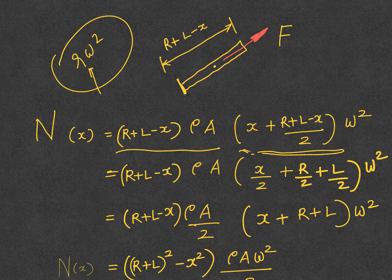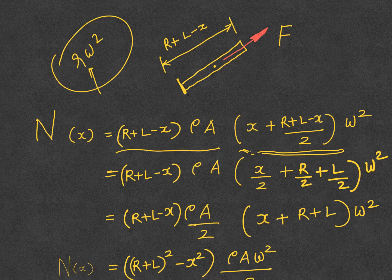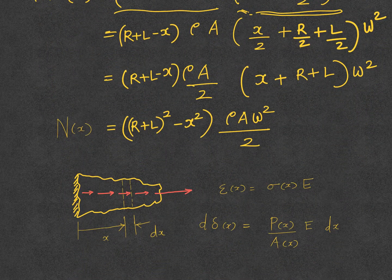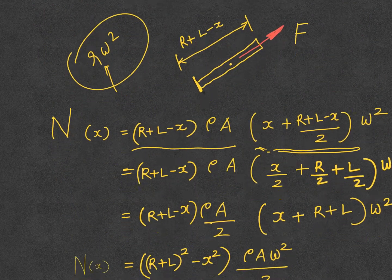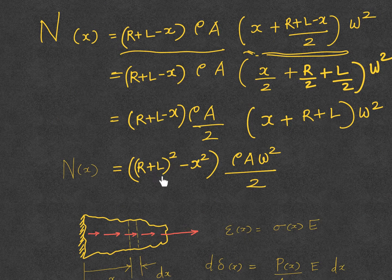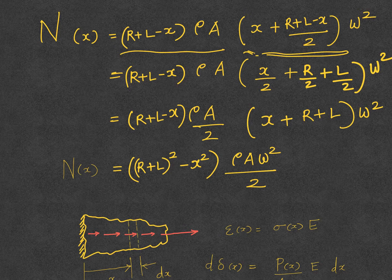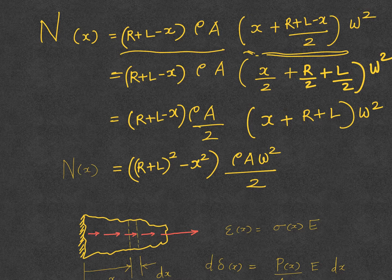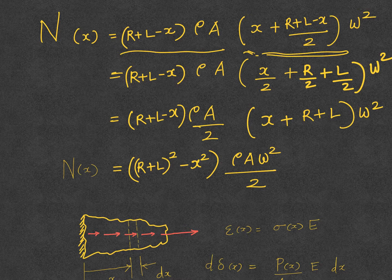Now that expression will give you the net force acting at a section at distance x. Now you know what is the force acting at the section. Quite interestingly, in this problem the net force is not constant—for most problems it is constant, but here it varies with x. It is maximum when x equals zero because you have a whole bunch of mass pulled apart from the center of rotation.